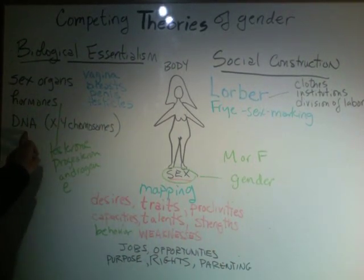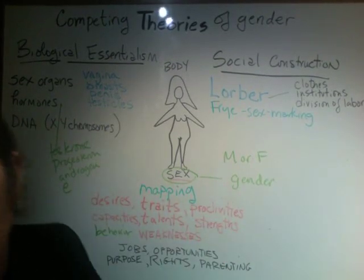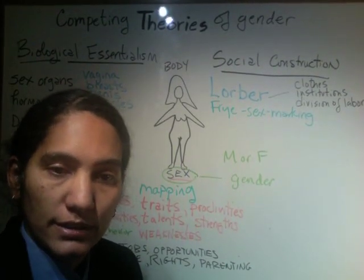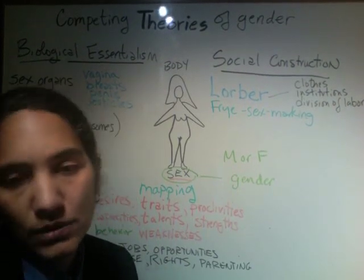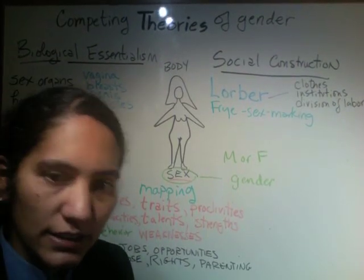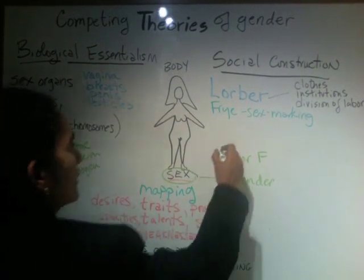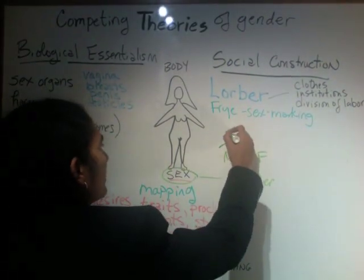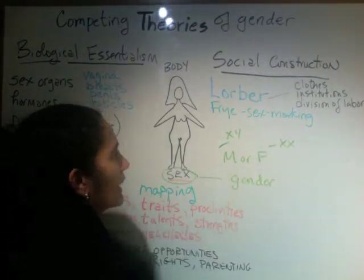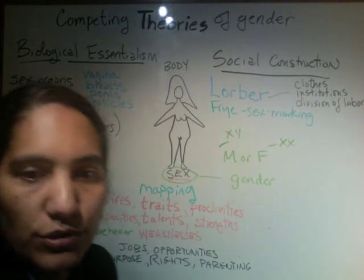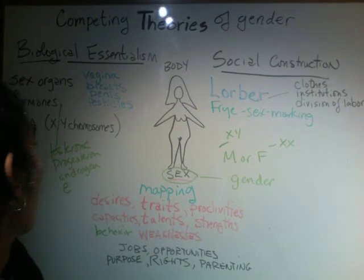You can also look at DNA. A biological essentialist might say all you have to do is test a child's chromosomes: if it has an X and a Y, it's a male; if it has two Xs, it's a female. So your chromosomes actually determine whether you're male or female.